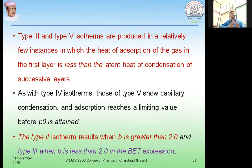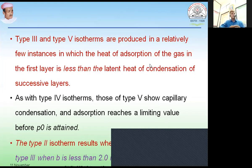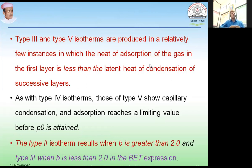This was all about adsorption isotherms. We tried to understand the relationship between the amount of gas adsorbed onto the surface of adsorbent at equilibrium pressure at constant temperature. There were three adsorption isotherm equations we handled: Freundlich, Langmuir, and BET adsorption isotherm equations. This was the important concept of adsorption isotherm related to adsorption of gases onto the surface of solid materials. Thank you.